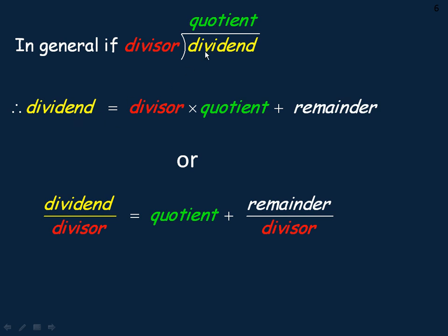The division statement looks like this: the dividend is equal to the product of divisor and quotient, plus whatever remainder you might have. If you take this division statement and divide the whole thing by the divisor, both sides.